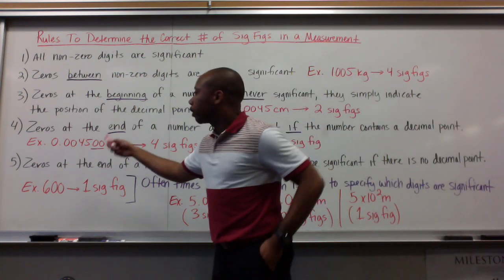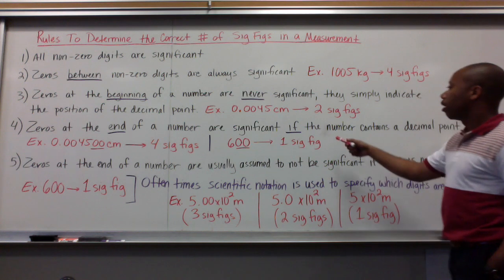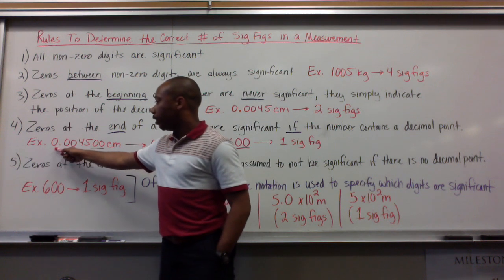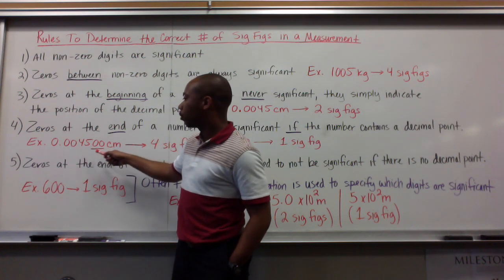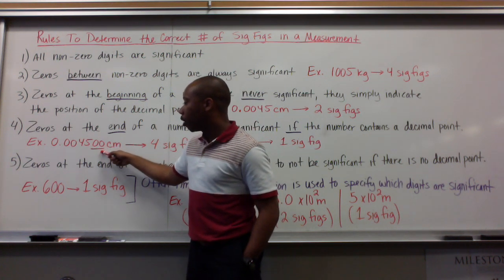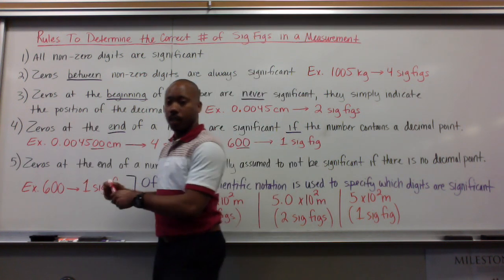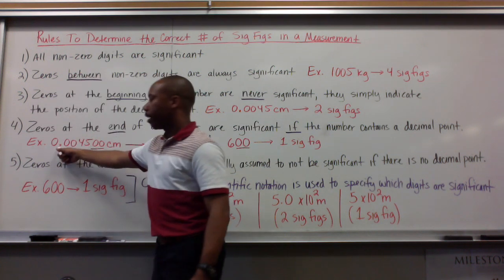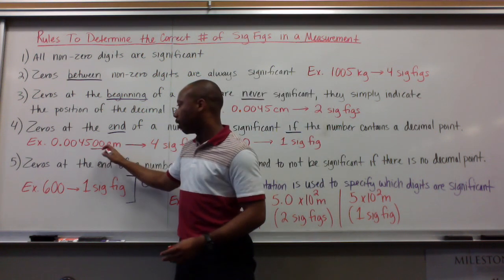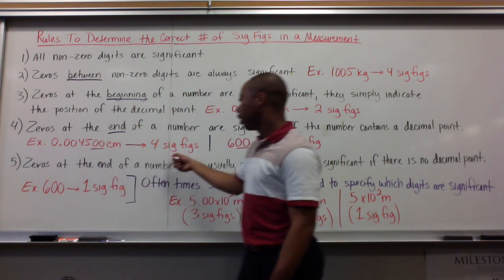Rule number four: zeros at the end of a number are significant if — and it's conditional — the number contains a decimal point. For example, 0.004500 centimeters: these two zeros at the end are significant because they come after a decimal point. It's the same number as before, but I have two more zeros indicating it's precise out to that place. So I have four significant figures.